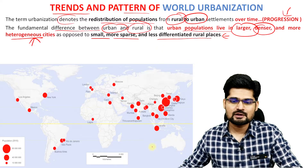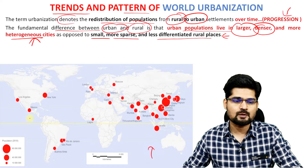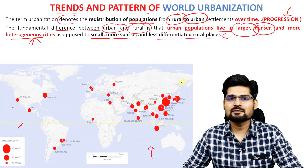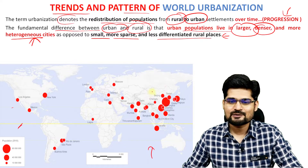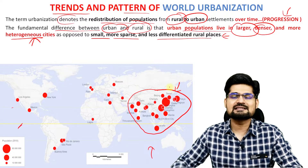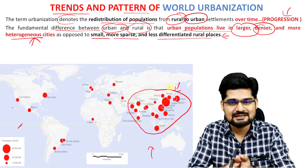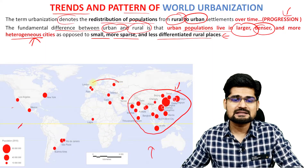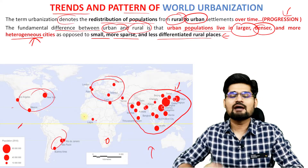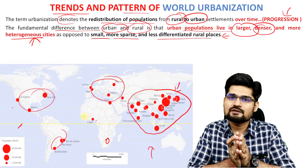If you observe this particular map of the world, world urbanization has been represented through populations and circles. Where is the most number of urban places being created? Look into Asia and Southeast Asia — this is the future, this is the trend where most new urban places are being created. Earlier urban places are in Europe, in the Americas, and also in Africa. These are the new trends and patterns we need to understand.